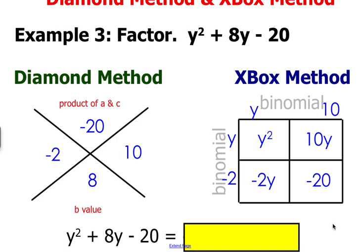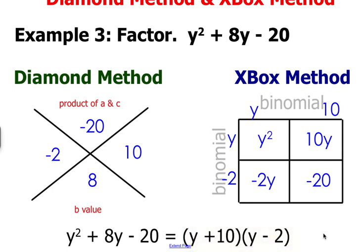So when you factor the trinomial y squared plus 8y minus 20 in factored form that is your answer. Notice y plus 10 is the binomial at the top and y minus 2 is the binomial on the side.